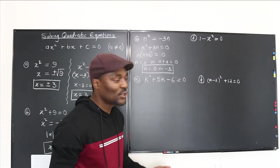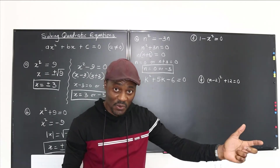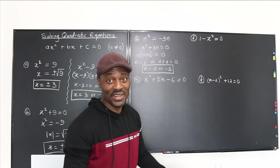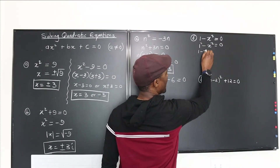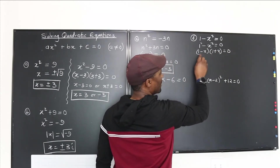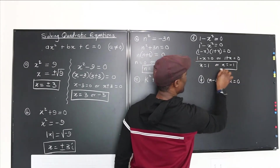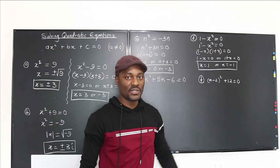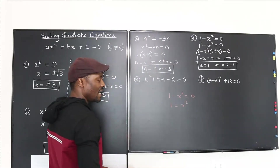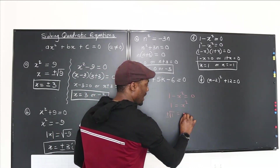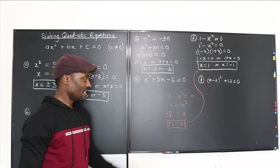For 1 − x² = 0, treat it as a difference of two squares: (1 − x)(1 + x) = 0, giving x = 1 or x = −1. Alternatively, move x² to the other side: 1 = x², take the square root to get ±√1 = x, so x = ±1. Both methods give the same answer. Choose whichever is more convenient.